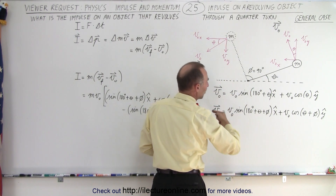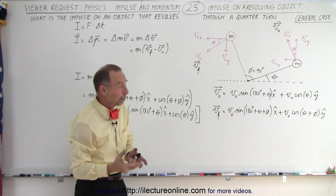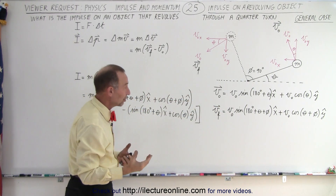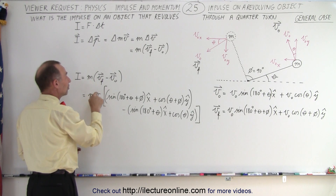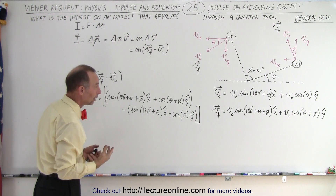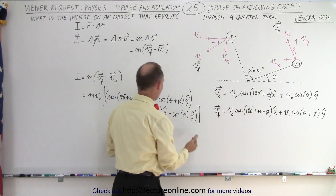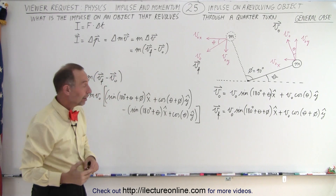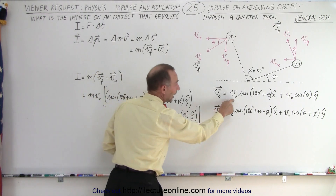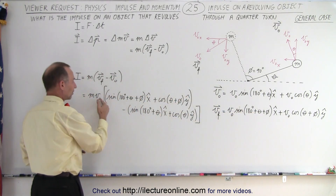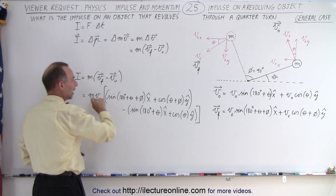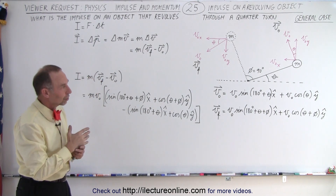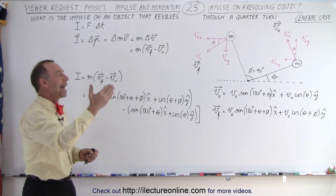So we now have the proper conversion from the very special case in the previous video to the general case shown here. When we calculate the impulse, it's still the mass times the change in velocity — final velocity minus initial velocity — vector quantities. We take the final velocity and subtract from it the initial velocity. Notice that I factored out v₀, because every term has a v₀ in it. We could also factor out m, so it's m times v₀ times this quantity, which gives us the impulse of an object rotating in a circle starting from any position and rotating through any angle phi.